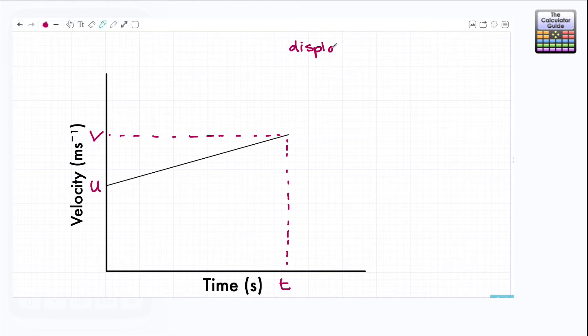Now if you remember from the first video in the series we made a connection between the displacement, which is another word for the distance, and the area under the graph. We use the letter s for displacement rather than the letter d and we know that equals the area under the graph. So let's have a look at the shape of this graph. What shape represents the area underneath the sloping graph that we have here?